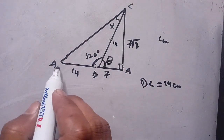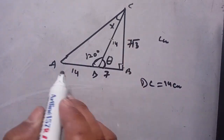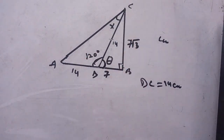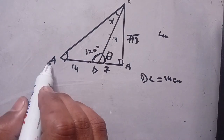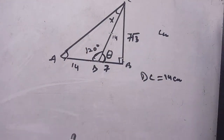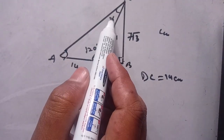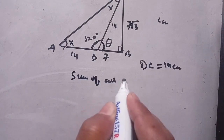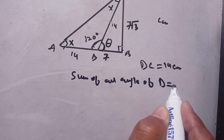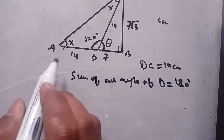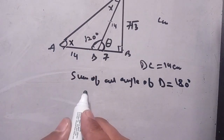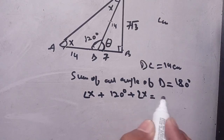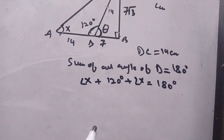DC equals 14 centimeters. Now, in triangle ADC, AD is equal to DC, and both are 14 centimeters. Since these two sides are equal, this is an isosceles triangle. This means angle DAC and angle ACD are the two equal angles. If angle ACD is x, then angle DAC is also x. We know that the sum of all angles of a triangle equals 180 degrees. So in triangle ADC: angle x plus 120 degrees plus angle x equals 180 degrees.